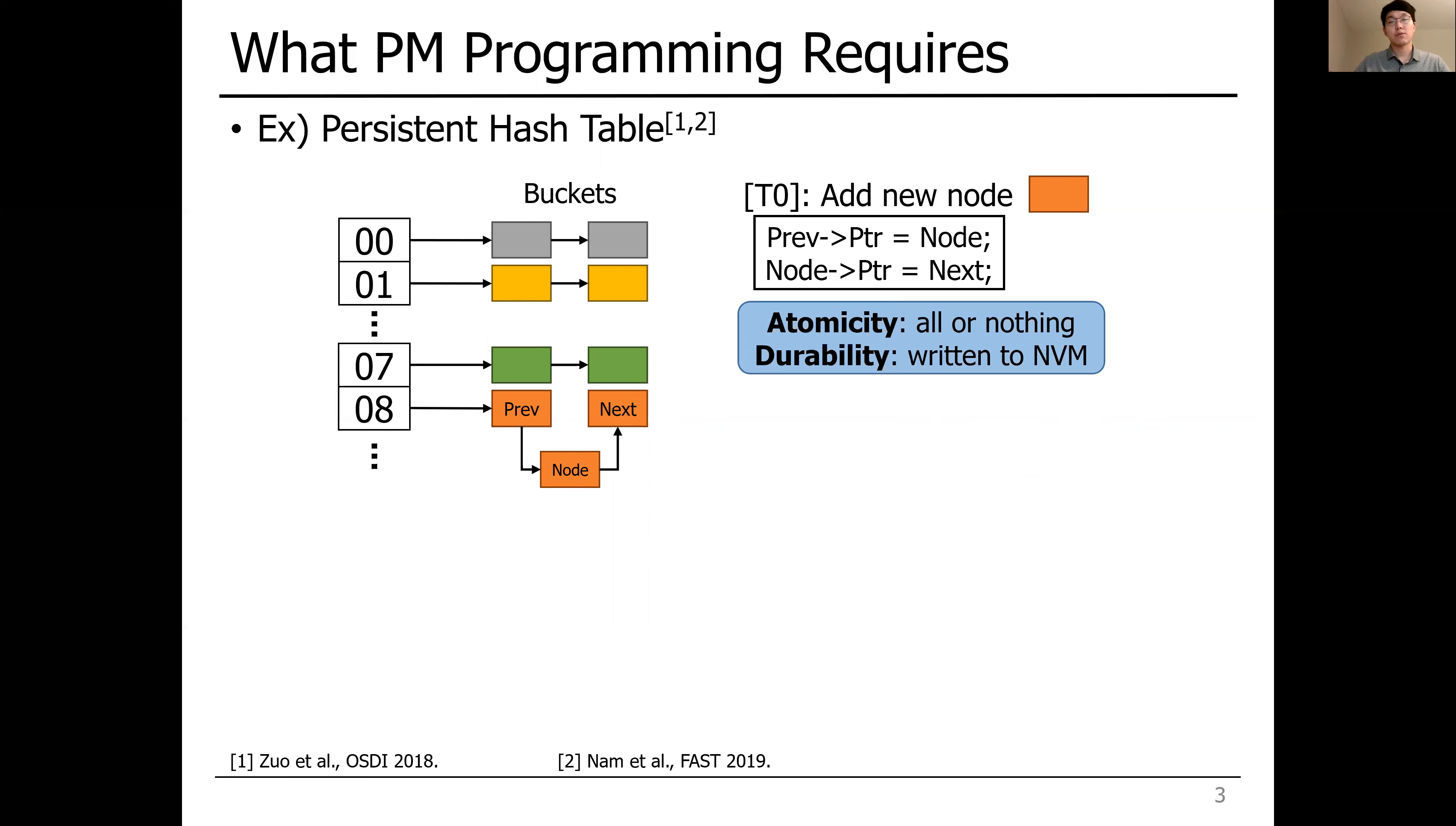In addition, what if there is another thread trying to insert a node to the hash table simultaneously? If it is concurrently accessed, this operation should be serialized, which requires isolation between threads.